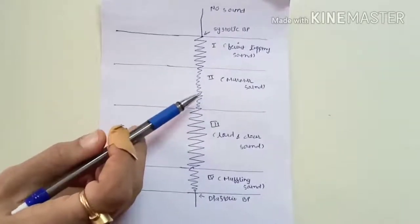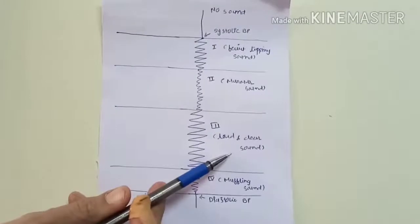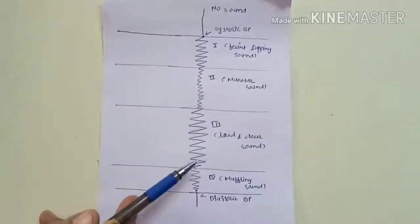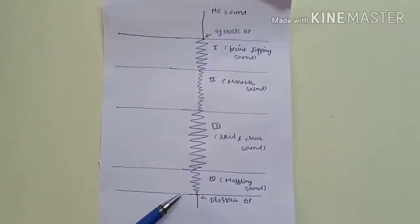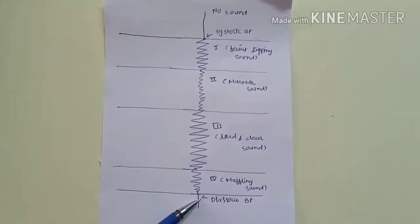Then it becomes loud and clear sound, and then it becomes muffled and finally disappears. Disappearance of the sound is known as diastolic blood pressure.